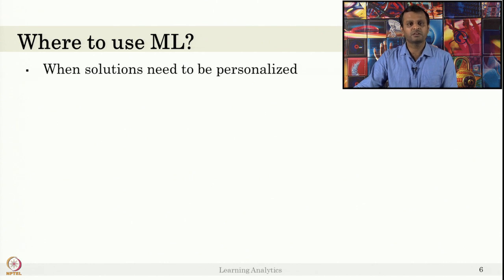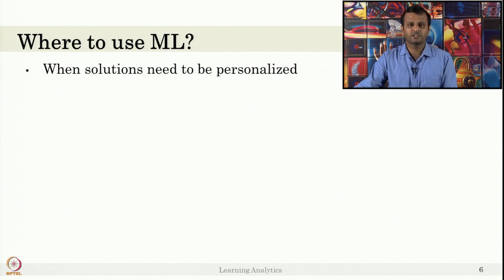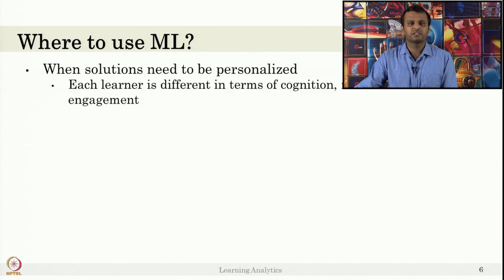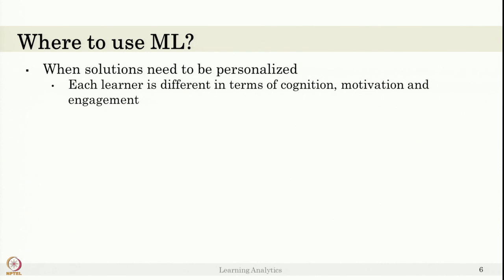We have to use machine learning when a solution needs to be personalized — for example, in intelligent tutoring systems, we need a solution for each individual student or at least some cluster of students. We can use machine learning algorithms because we have not seen this particular student's behavior before, but we have seen similar students' performance. If the solution you are going to provide is personalized, machine learning algorithm can be used, since each learner is different in terms of cognition, learning ability, skills, and motivation.